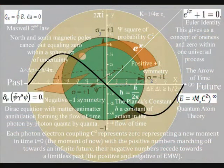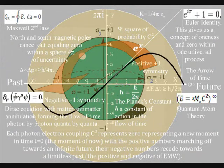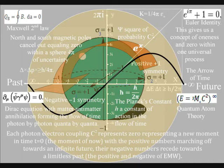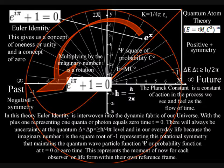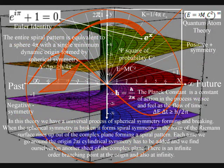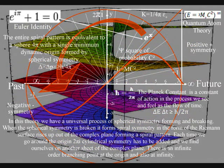In the top right-hand corner of this diagram we have Euler's identity — the most beautiful equation to come out of the mind of man. But this beautiful equation has no meaning or purpose in modern physics. In this theory, however, Euler's identity is interwoven into the dynamic fabric of our universe, with the plus one representing one quantum or photon equalling zero time — t equals zero — the moment of now. To understand this further we have to use the next diagram, which shows how this spherical symmetry breaks, forming spiral symmetry that has line symmetry for the arrow of time. When the spherical symmetry is broken it forms spiral symmetry in the form of the Riemann surface rising up out of the complex plane, forming a spiral pattern. Euler's identity is at the heart of this process.